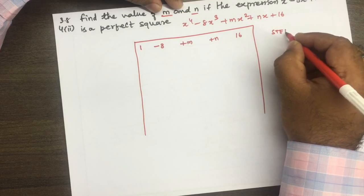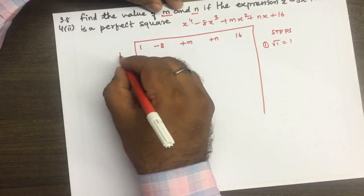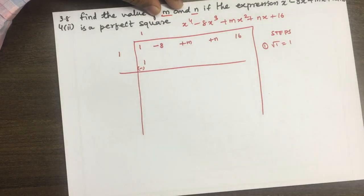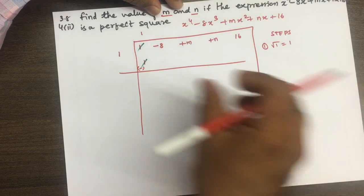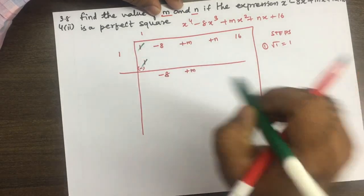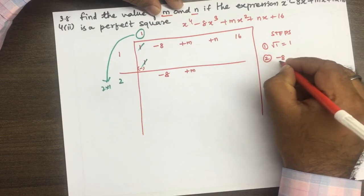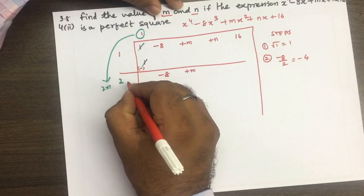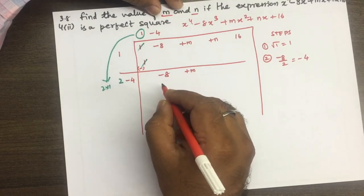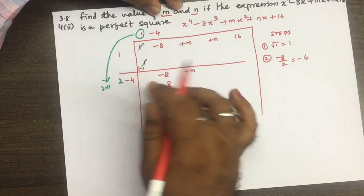Steps में first term का square root लिखेंगे: square root of 1 = 1, यहाँ भी और यहाँ भी। दोनों को multiply करके first term के नीचे लिखकर sign change करेंगे, positive negative term को cancel करेंगे। अगले दो terms एक साथ नीचे लेके आना होगा: minus 8, plus m। ऊपर जो number है उसको 2 से multiply करके यहाँ लिखना होगा: 2 into 1 = 2। Step 2 में minus 8 को 2 से divide करेंगे तो minus 4 मिलेगा। Minus 4 से 2 और minus 4 दोनों को multiply करके: minus 4 into 2 = minus 8, minus 4 into minus 4 = plus 16।